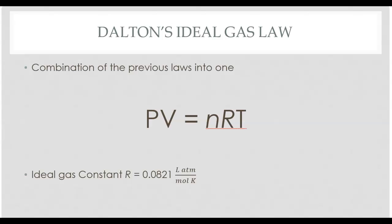The P stands for pressure, V for volume, N for moles, R is the constant which is 0.0821 liters times atmospheres per mole Kelvin, and then T is temperature in Kelvin.